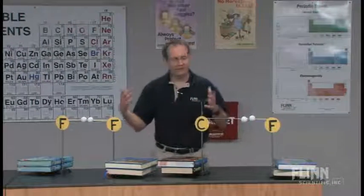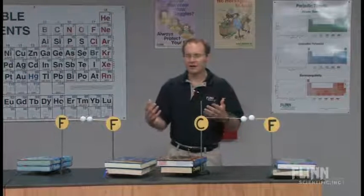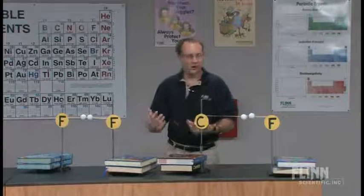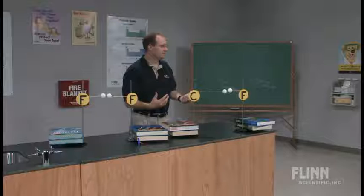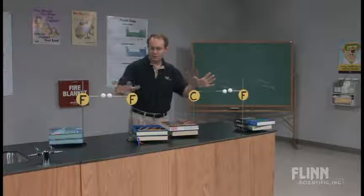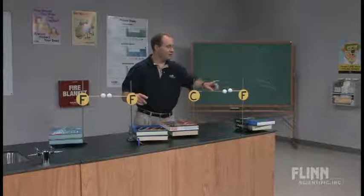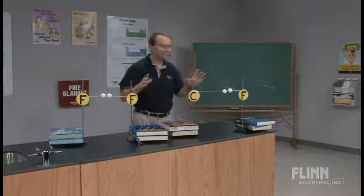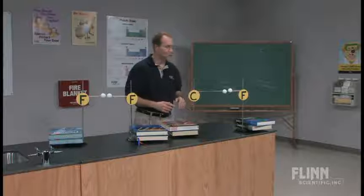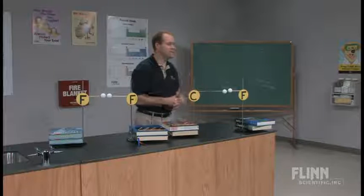We're taking something — electronegativity — and if you just think about the definition, the atom's ability to attract electrons to itself, we can take that abstract definition and put it into a concrete model where students may say thicker rubber band, thinner rubber band. It really is that simple. And we can go forward with that in terms of talking about polar bonds and non-polar bonds.